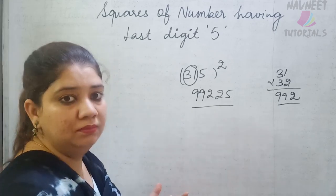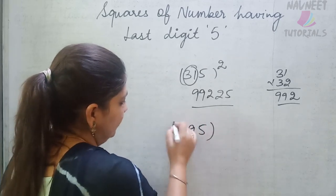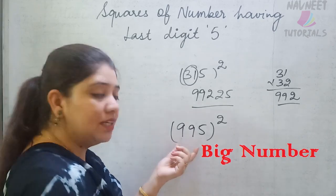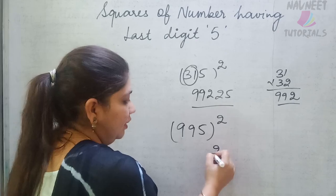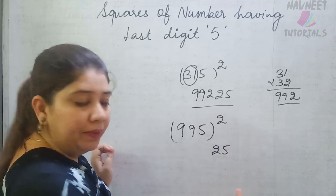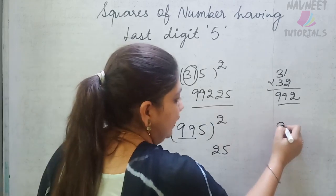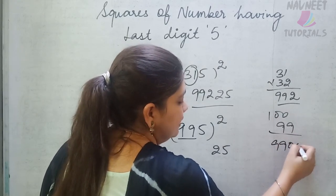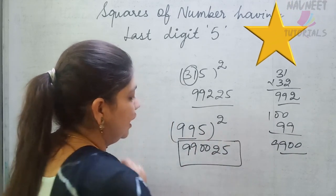Consider 995 squared — such a big number. The last two digits are 25. The remaining part is 99, and the next number is 100. So 99 times 100 is 9900. Write 9900 at the front and the answer is 990025.